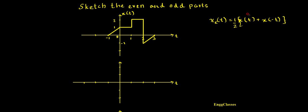The very first thing is I should know what x(t) is — it is already given, so we know it — and I should also find what x(-t) is, which is not given. So the very first task is to sketch the reflected version of the given signal, x(-t).